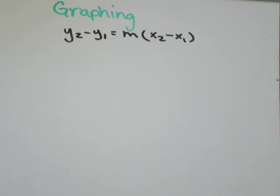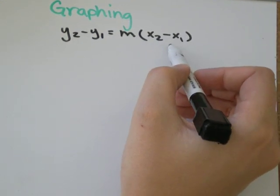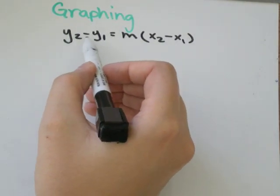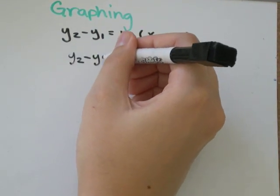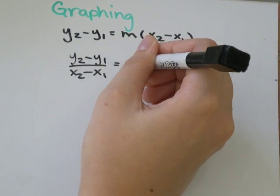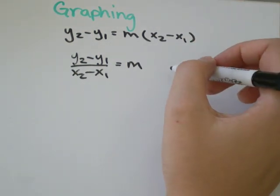This comes from the formula—if we were to divide this side by x2 minus x1 and do the same thing to this side, we will get y2 minus y1 over x2 minus x1 equals m. So m standing for slope. So what this means is,